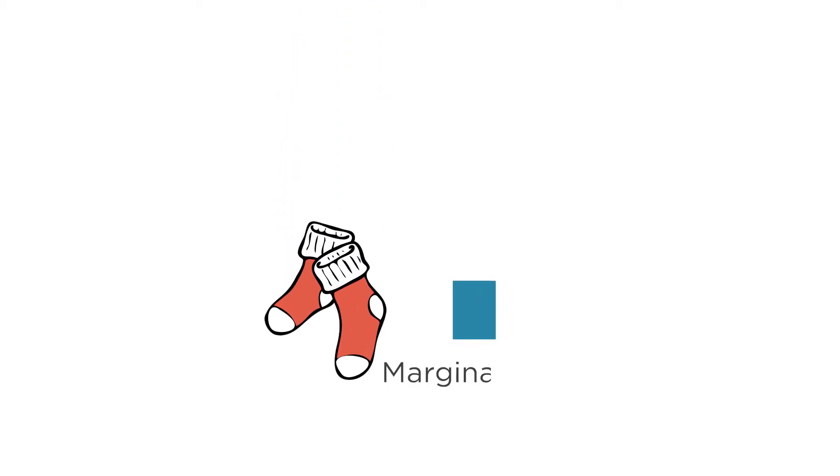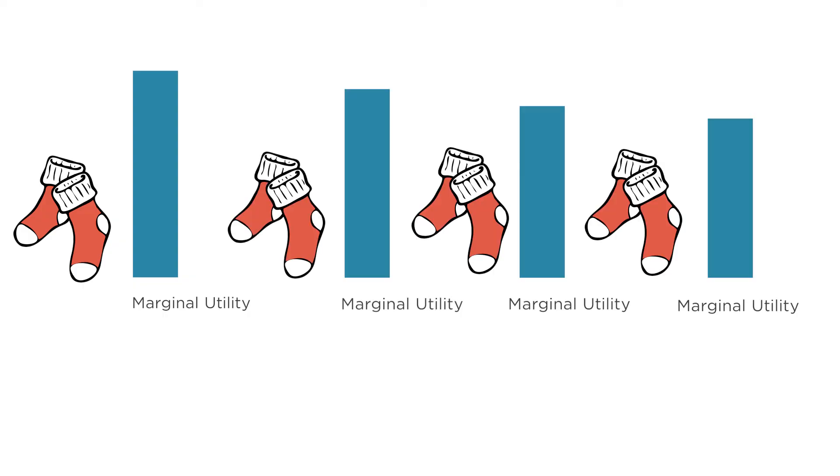Now think about socks. If you own no pairs of socks, the marginal utility of socks is very high. You can get a lot of benefit from buying the first pair. Now imagine you only own one pair of socks. What's the marginal utility now? Unless you love doing laundry every day, the marginal utility is still really high. You can get a lot of utility from owning a second pair and a third pair and so on. There's still diminishing marginal utility, but it doesn't diminish as fast as it does for a newspaper. So if you're ever confused about marginal utility, remember to think about newspapers and socks.